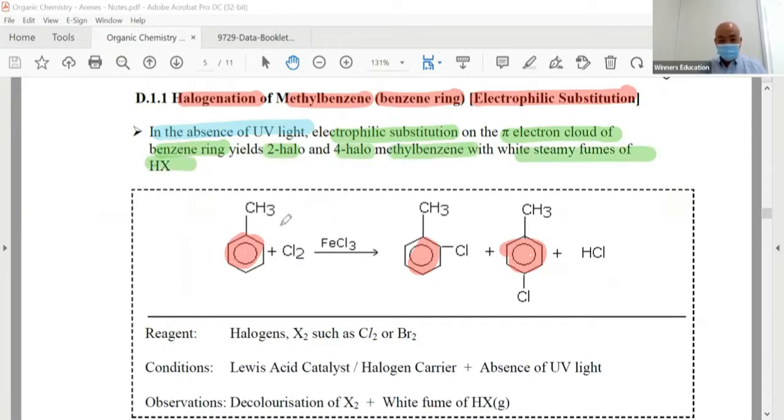The benzene ring reacts with Cl2 with a halogen carrier to give you white fumes and then a chlorinated product. So reagents we have discussed, conditions we have discussed.